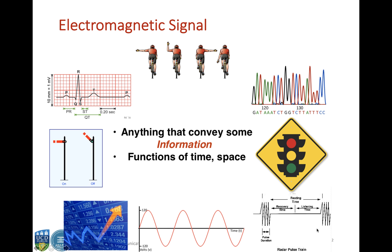So what do we mean by a signal? Anything that conveys information is a signal, and usually a signal is a function of time or space. For example, a cyclist showing hand signals for left, right, or straight is a signal. The traffic signal is also a signal, the ECG signal is also a signal, and an electronic voltage following a sinusoid is also a signal. A radar pulse train can also be a signal, and even stock index prices that go up and down are conveying some form of information.